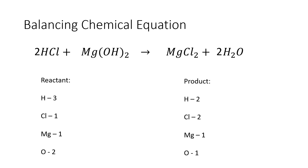Also, by adding a coefficient of 2 to the hydrochloric acid, the number of chlorine becomes two on the reactant side. So it is now balanced with the two chlorine in the product side. And also, by putting a coefficient of 2 in front of water, it affects the number of oxygen — there are now two oxygen on the product side, which equals the number of oxygen on the reactant side. So this is now the balanced chemical equation of the reaction between hydrochloric acid and magnesium hydroxide.